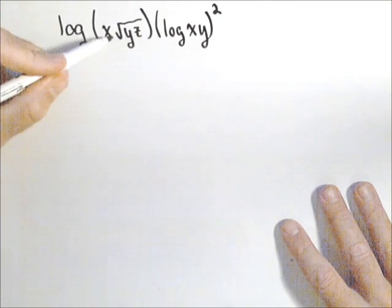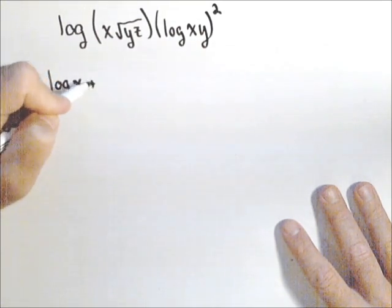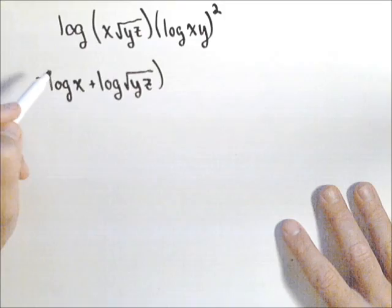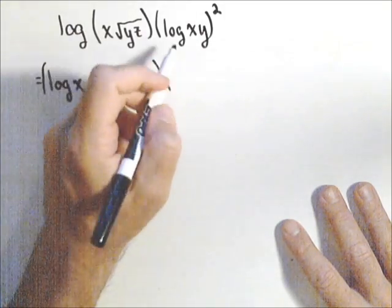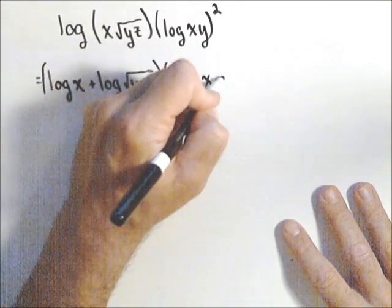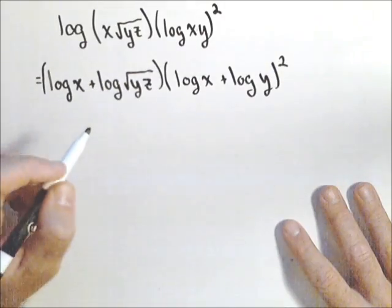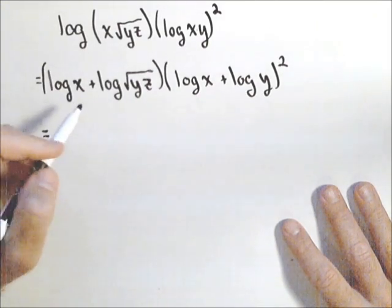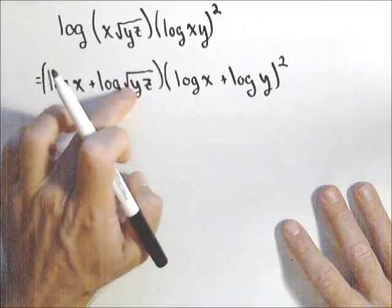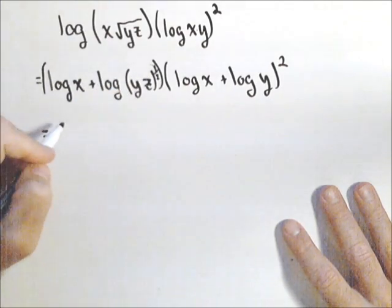First, here I have a product, so I can rewrite that as log of x plus log of square root of yz. Now I'm going to put some parentheses around this, because that's going to be times. Now again, I have a product, so inside the parentheses, I'm going to do log of x plus log of y. So I'm using that product to sum formula, that quantity squared. Now, we're not quite all the way down. This thing needs to be simplified some more. Remember, taking the square root of something is the same thing as raising it to the one-half power. So I can pull that one-half out front.